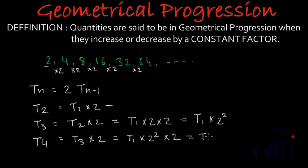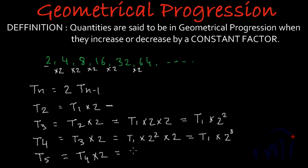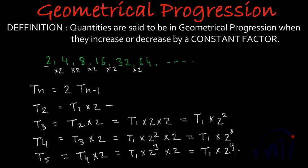So T4 can be written as T1 multiplied by 2 to the power 3. And can you tell me how T5 will be written? T5 will be written as T1 multiplied by 2 cubed, multiplied by 2, and this will be equal to T1 multiplied by 2 to the power 4. Isn't it? Yes.